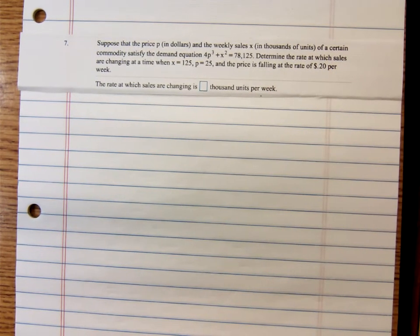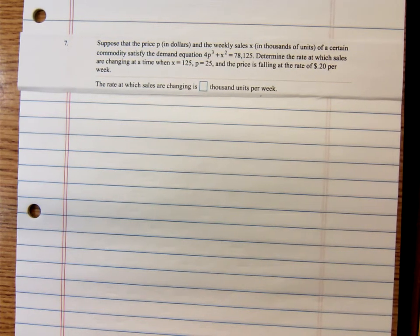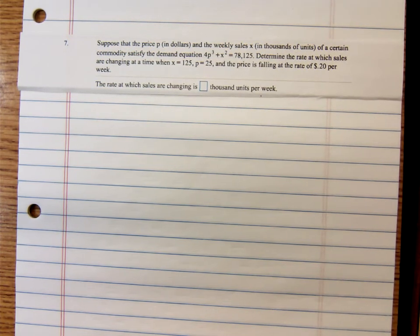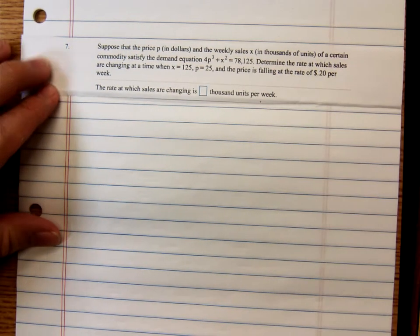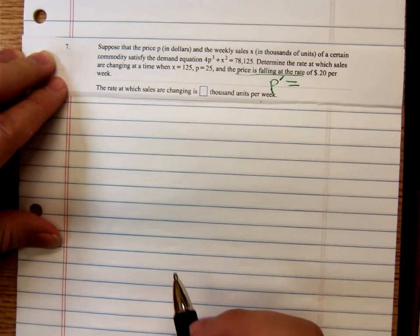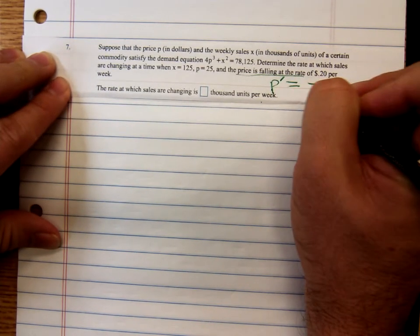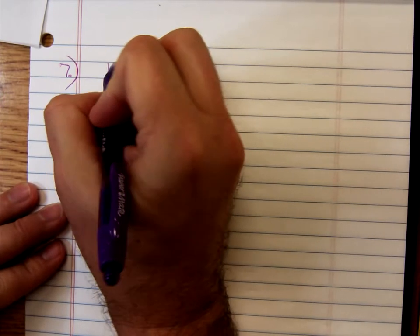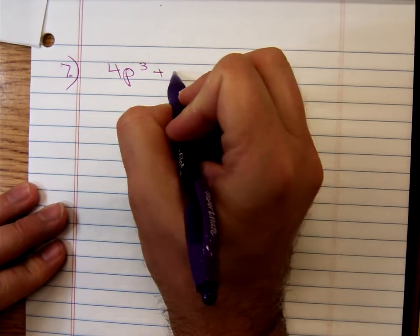So suppose that the price P in dollars and the weekly sales X in thousands of units of a certain commodity satisfy the demand equation 4P cubed plus X squared equals 78,125. Determine the rate at which sales are changing at a time when X equals 125 and P equals 25, and the price is falling at a rate of $0.20 per week. That sounds like a rate of change to me. The price is falling, so P prime is going to be negative 0.2. Let me write this problem down. This is number seven.